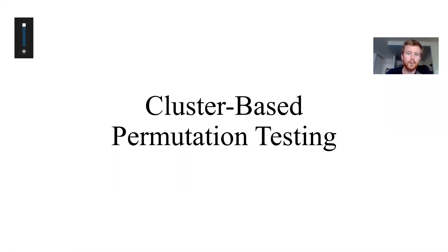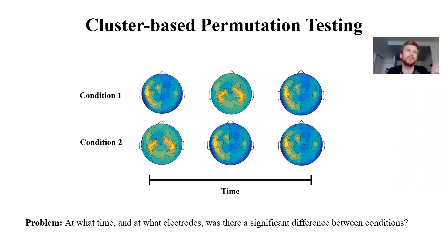Let's say the data you're working with had a task with two conditions, and you've gone ahead and analyzed the ERPs or the oscillatory power for all your participants. Now you want to know when there were differences between your two conditions. If you have some prior knowledge, you might say that at a certain set of frontal electrodes from 200 to 300 milliseconds, we should find an effect.